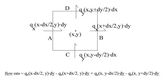Similarly, the heat flow rate out of the control volume through side B is Q_x at x plus dx over 2, y, times dy. Now let's look at sides C and D. Only the y component of heat flux corresponds to heat flowing through sides C and D. The heat flow rate into the control volume through side C is Q_y at x, y minus dy over 2, times dx, and the heat flow rate out through side D is Q_y at x, y plus dy over 2, times dx. So the total heat flow rate into the control volume is the rate in through side A minus the rate out through side B, plus the rate in through side C minus the rate out through side D.